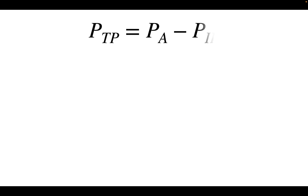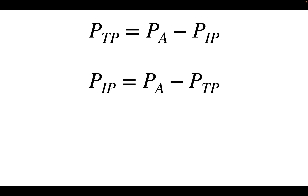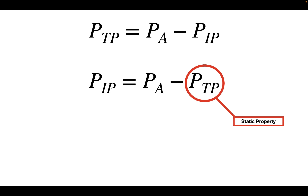I'd like to start off with the transpulmonary pressure equation. The transpulmonary pressure is going to be equal to the difference between the alveolar pressure and the intrapleural pressure. We can solve for the intrapleural pressure by rearranging this equation, and when we do that, we can identify two properties of the lung. The first is the transpulmonary pressure, which represents the static properties of the lung. The next is the alveolar pressure, which represents the dynamic properties of the lung.